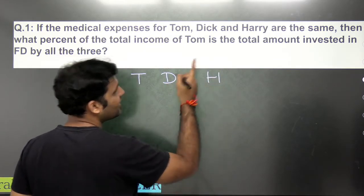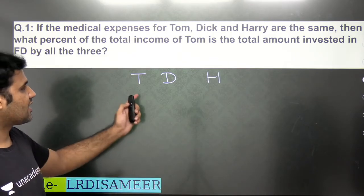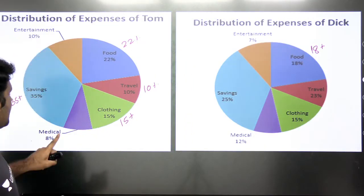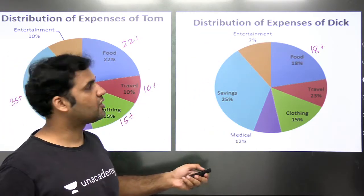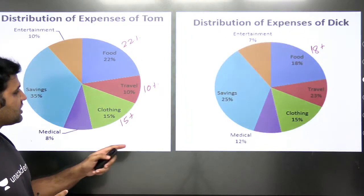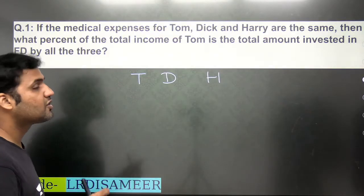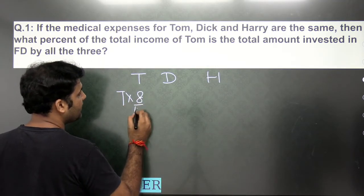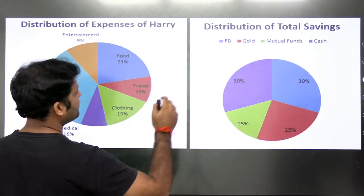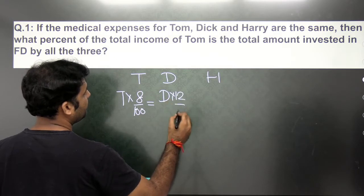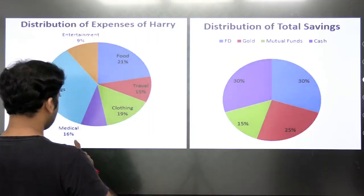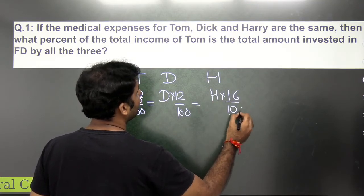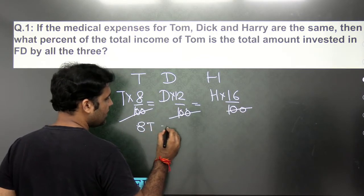Since the medical expenses of Tom, Dick and Harry are the same, let's first find the ratios of their total incomes using the pie charts. From the pie charts: Tom spends 8% of his income on medical, Dick spends 12%, and Harry spends 16%. Since these amounts are equal, 8% of Tom's income equals 12% of Dick's income equals 16% of Harry's income.